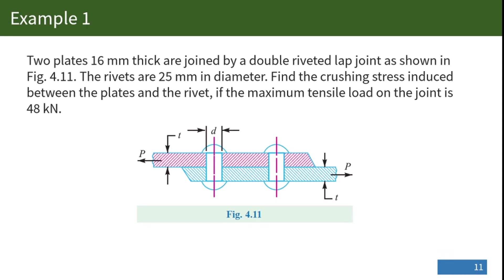Let us consider this example problem. Two plates of thickness 16 mm are joined by a double riveted lap joint. The rivets are 25 mm in diameter. We are required to find the crushing stress induced between the plates and the rivet, given that the maximum tensile load on the joint is 48 kilonewtons. These two plates are connected by a double lap joint, so there are two rivets connecting them, with plate thickness 16 mm and rivet diameter 25 mm.